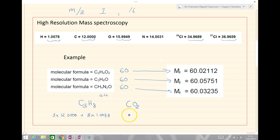Our carbon dioxide would be 2 times 12.000 plus 2 times the number which is just below 16, 15.9949.